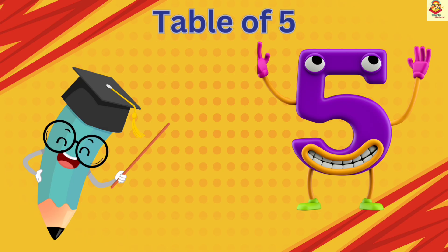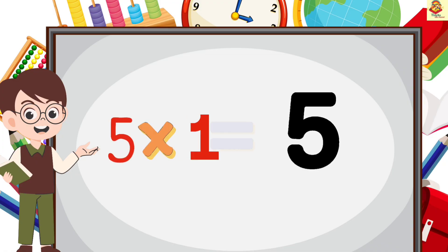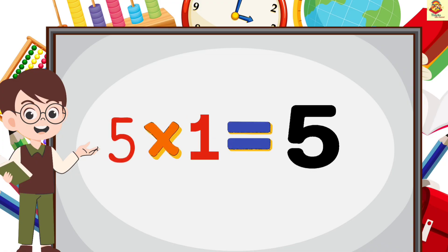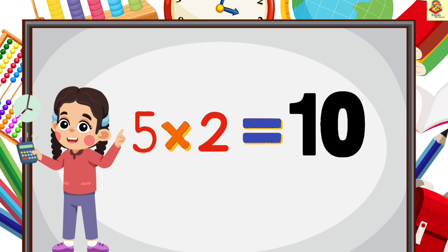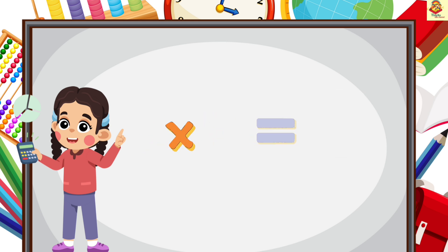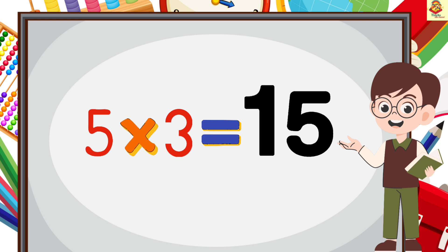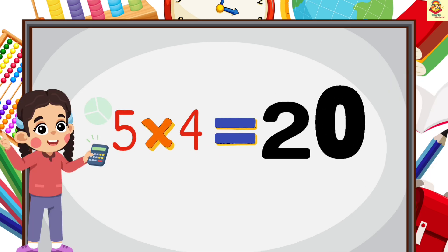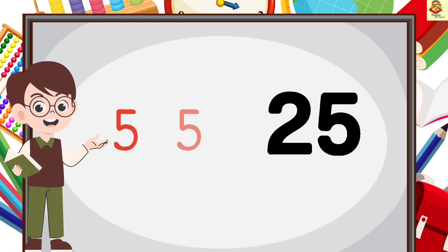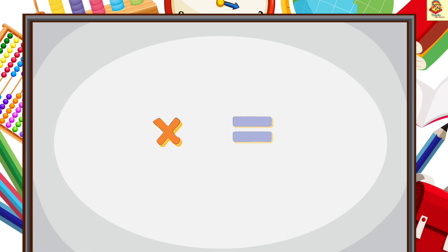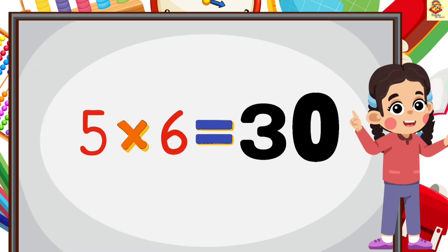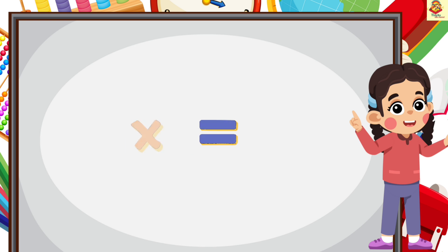Now kids, table of 5. 5 1's are 5, 5 2's are 10, 5 3's are 15, 5 4's are 20, 5 5's are 25, 5 6's are 30.